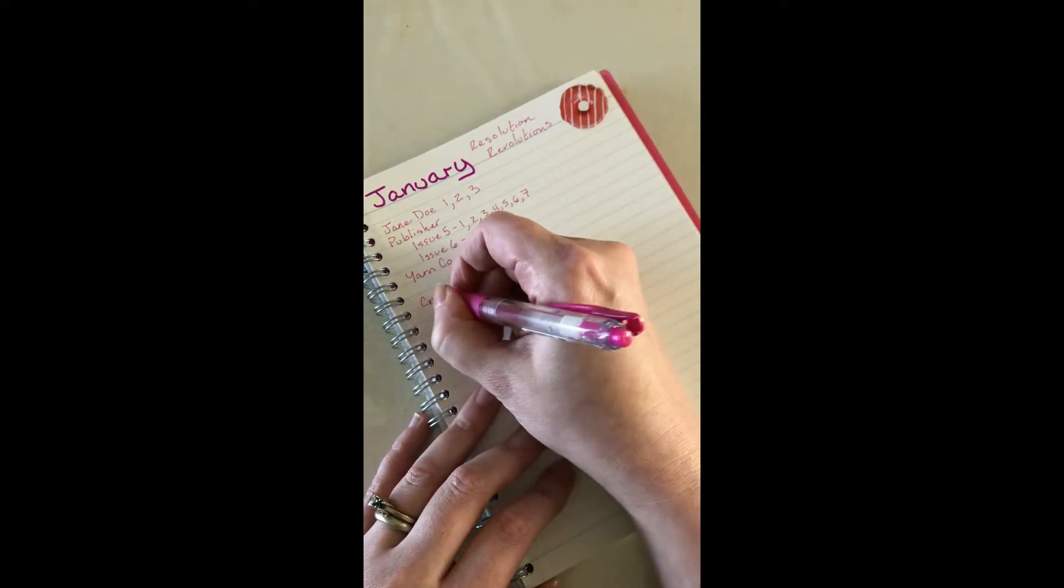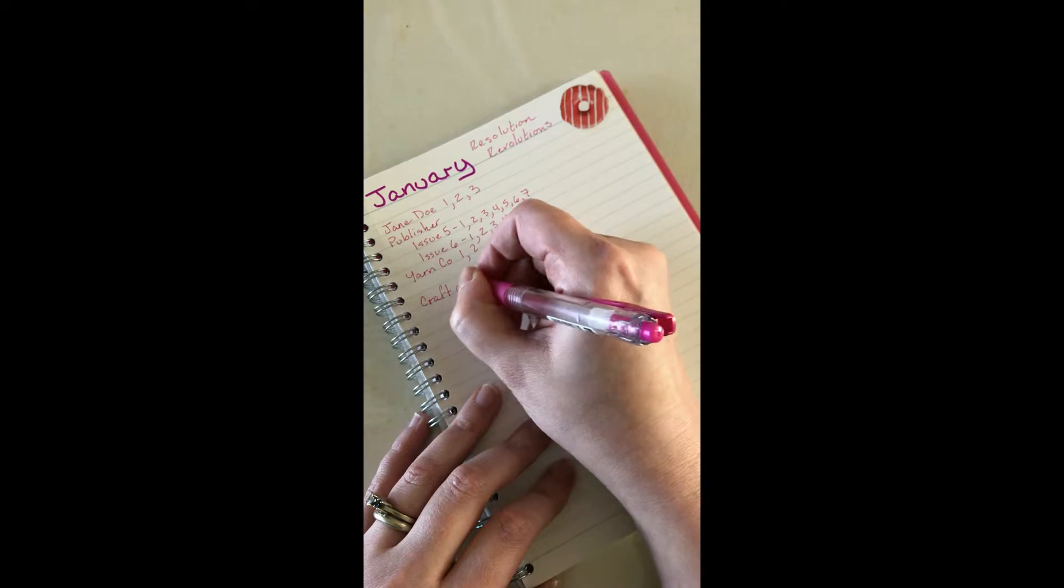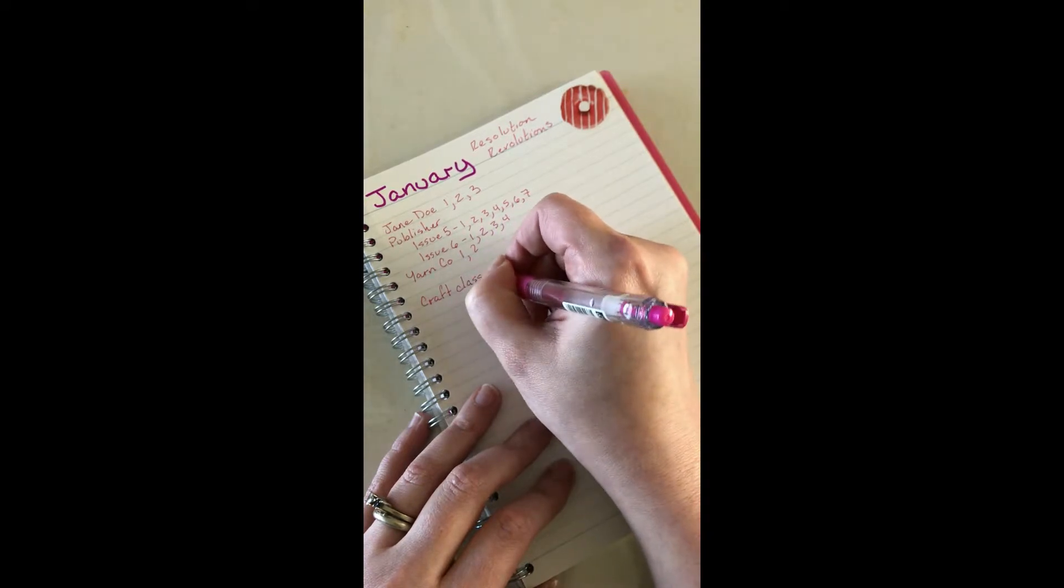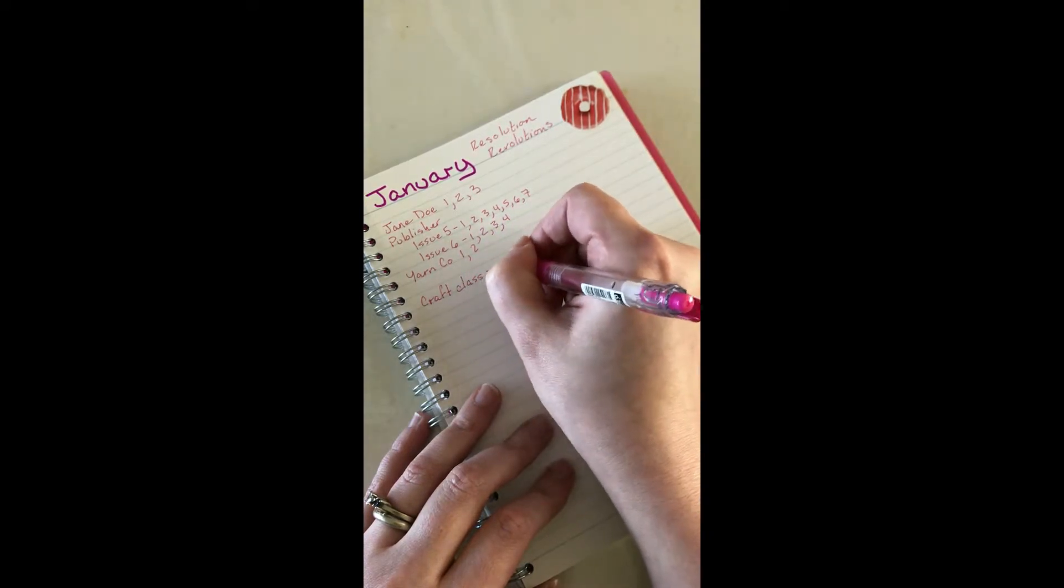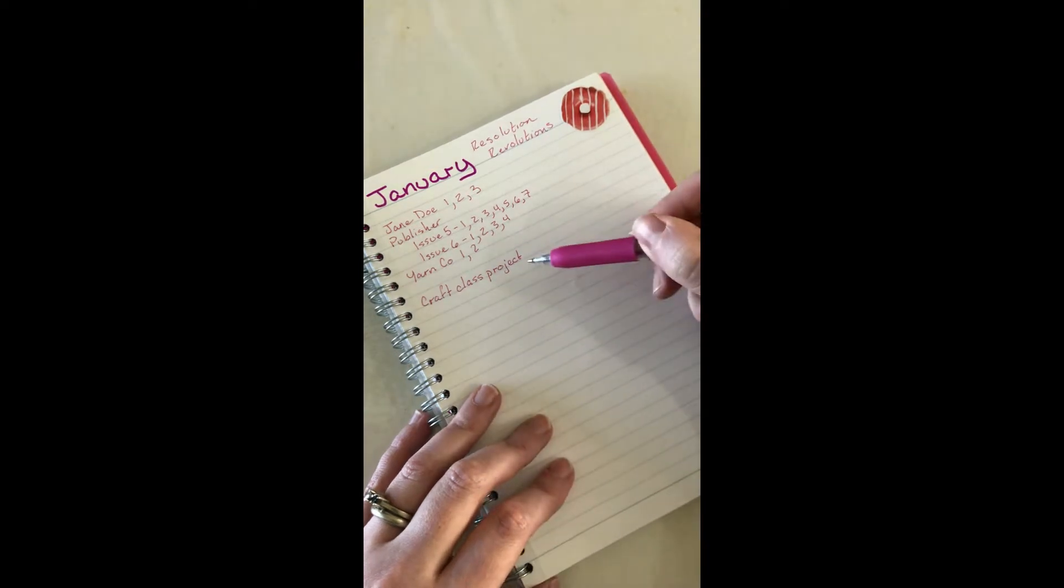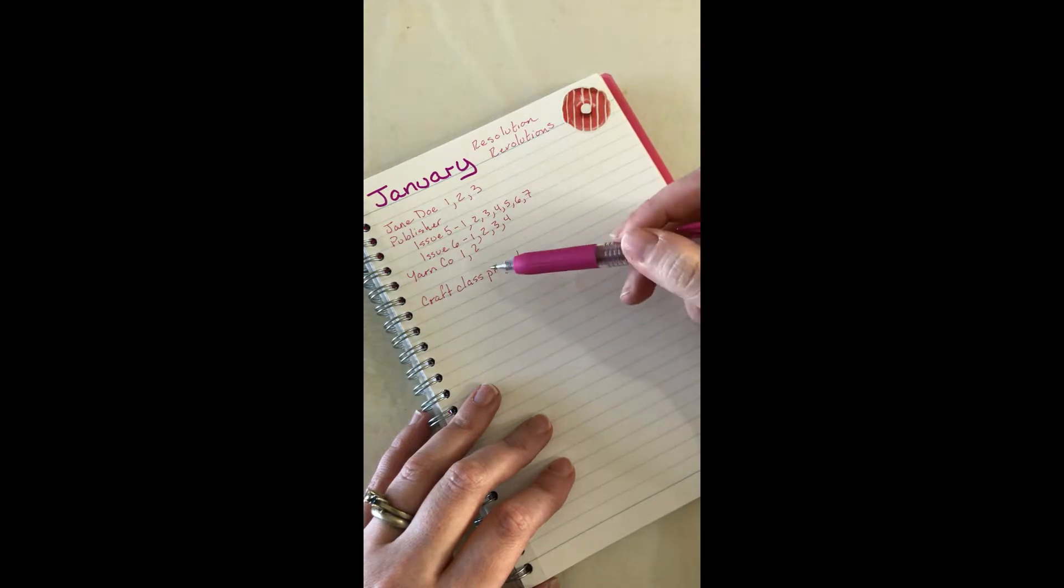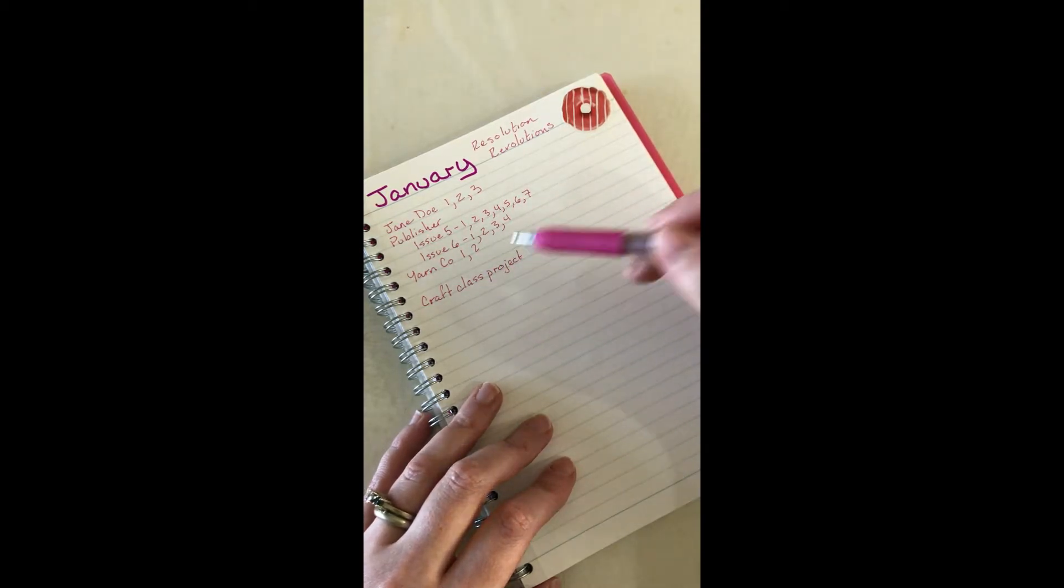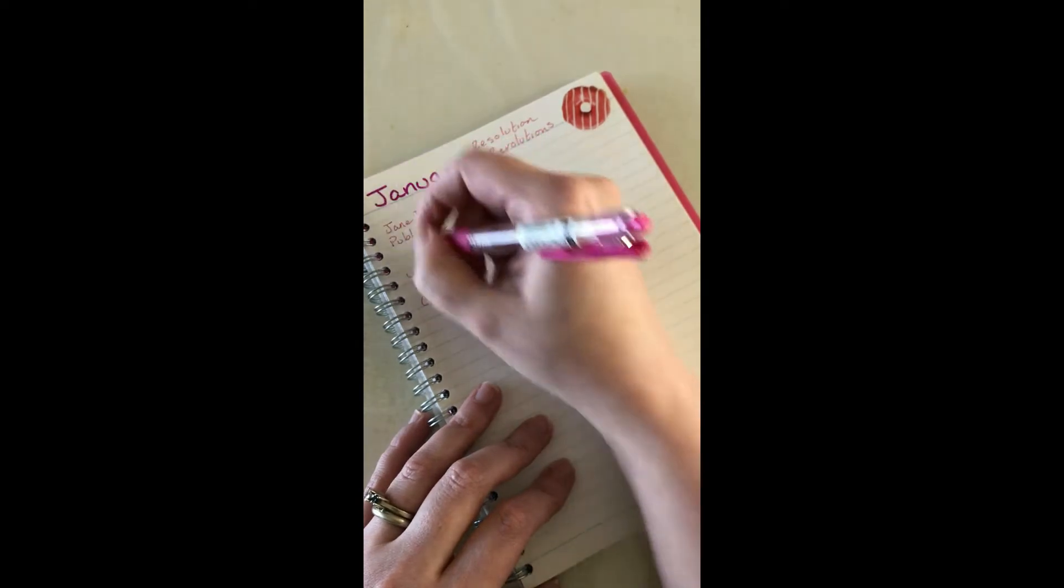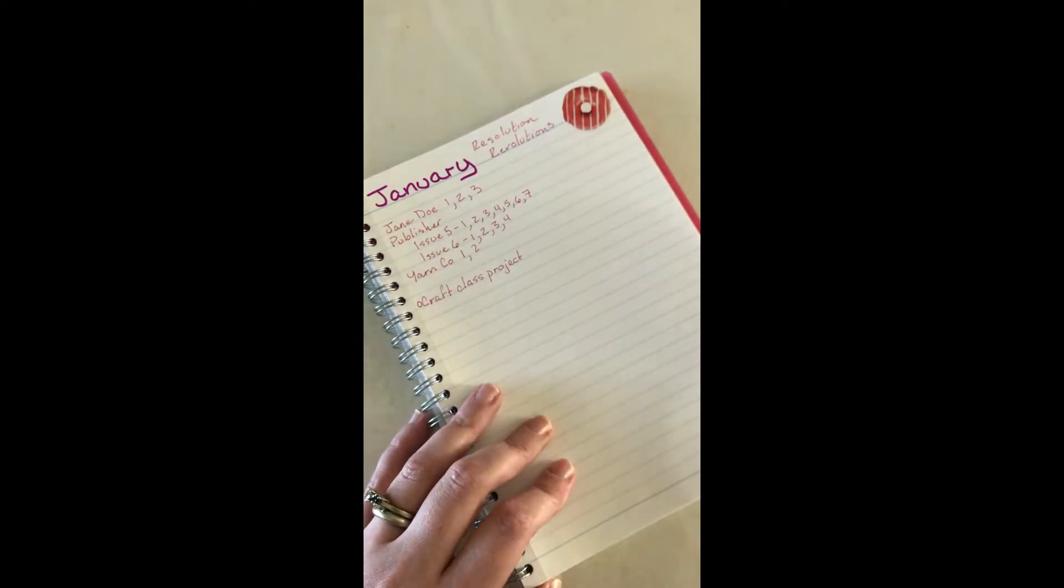There's the craft class project for my monthly craft class I teach locally. Now there are a lot of details to getting that craft class done. I'm not going to write all the details here, not going to write find the idea, order the supplies, make the sample, make the handouts. Just big thing craft class project. A lot of times I like to put a little bullet point next to the item.